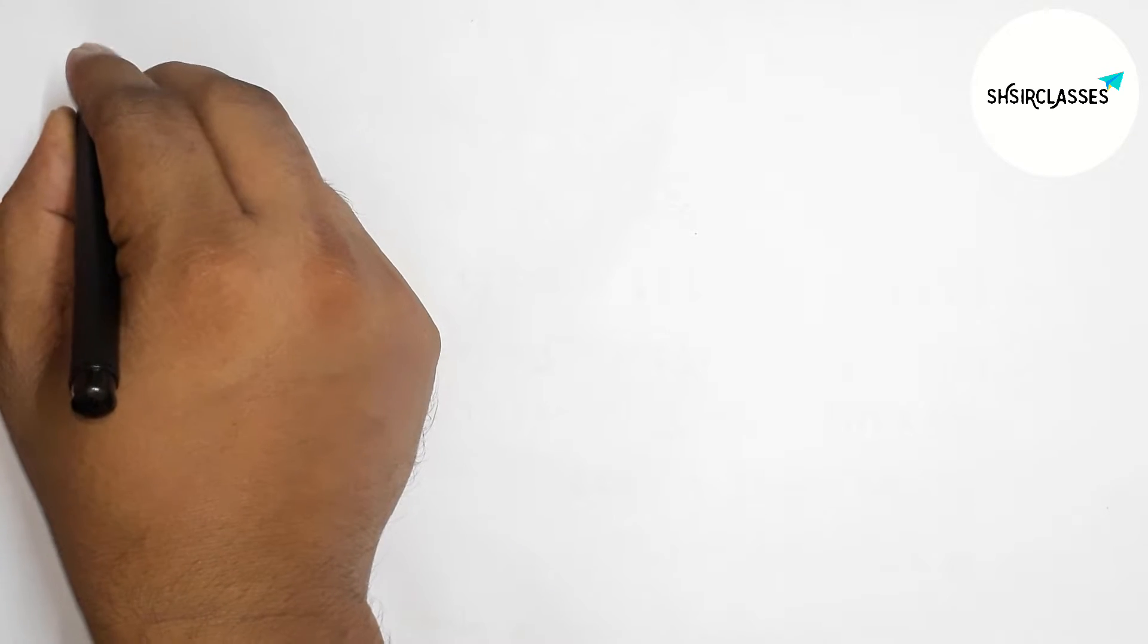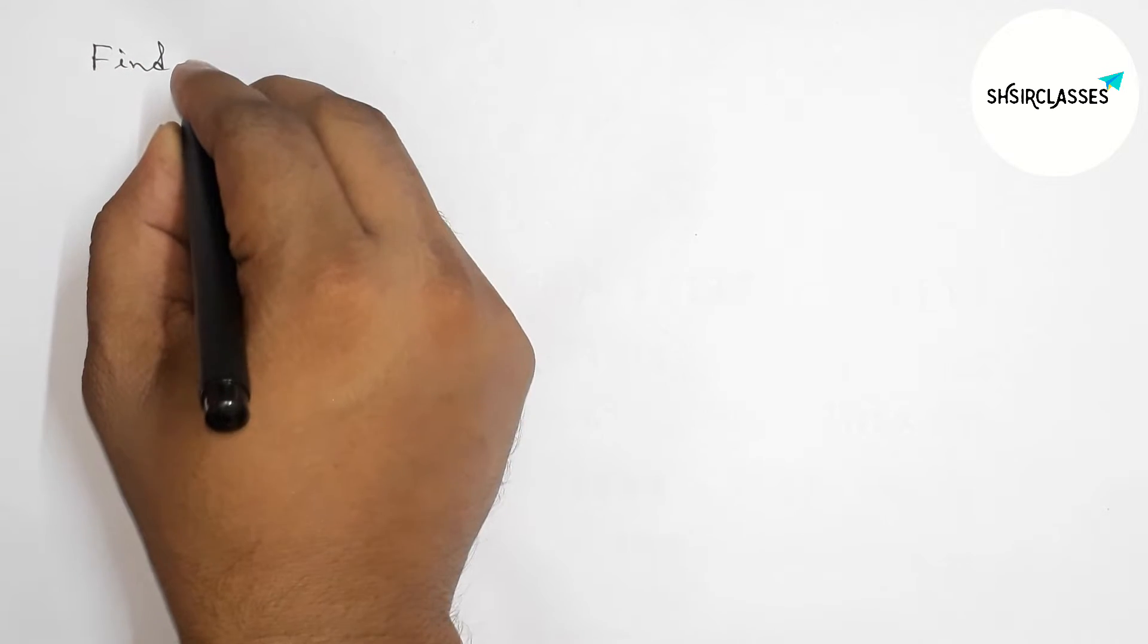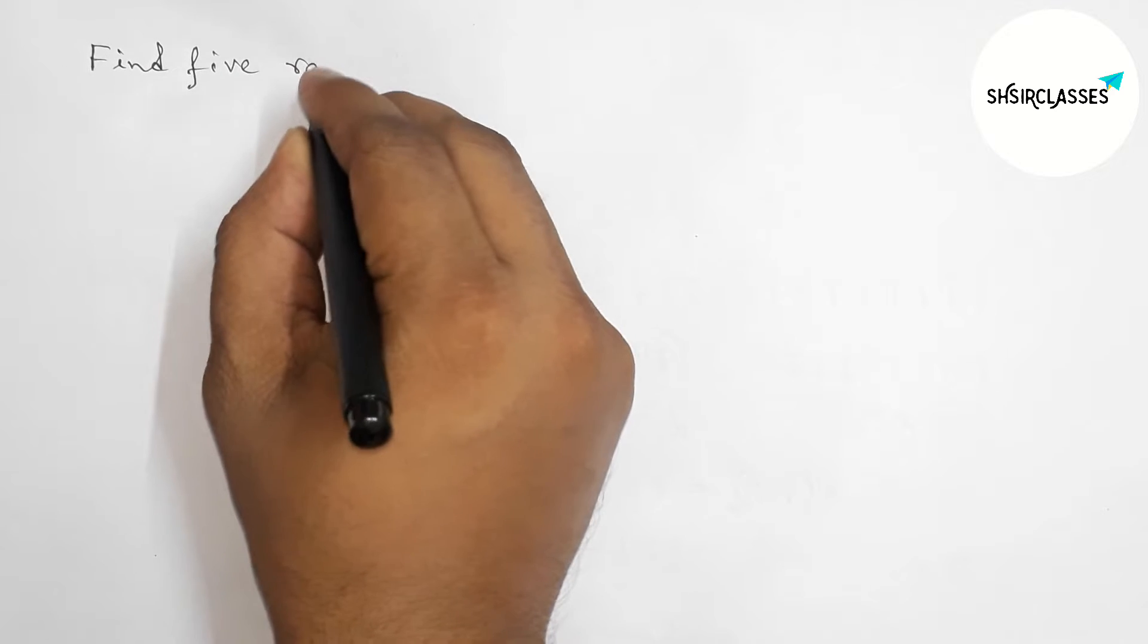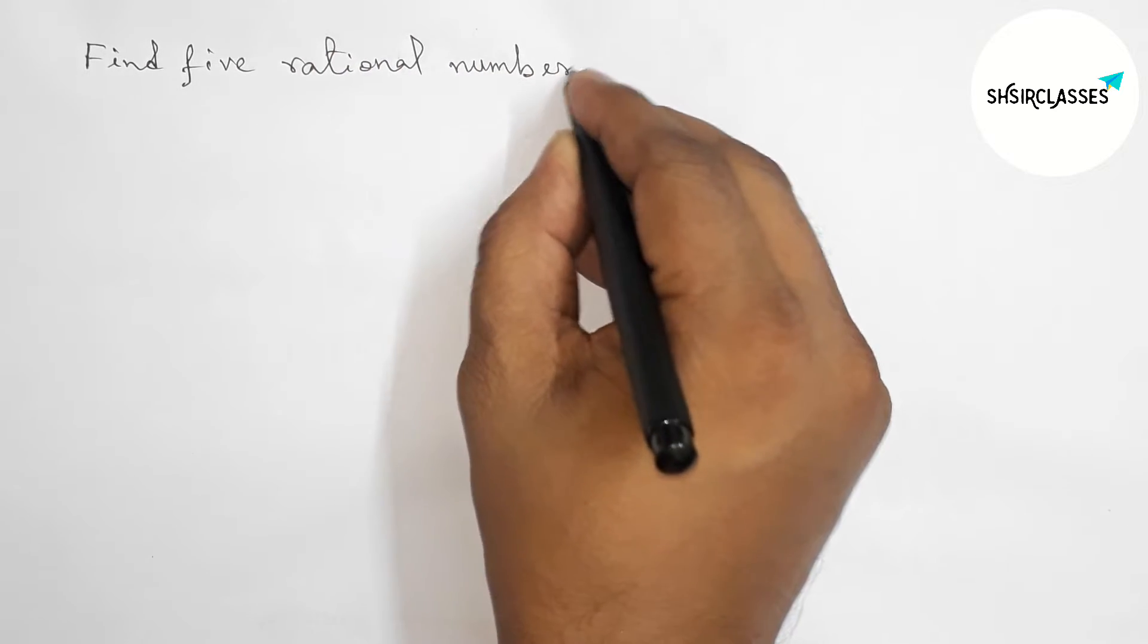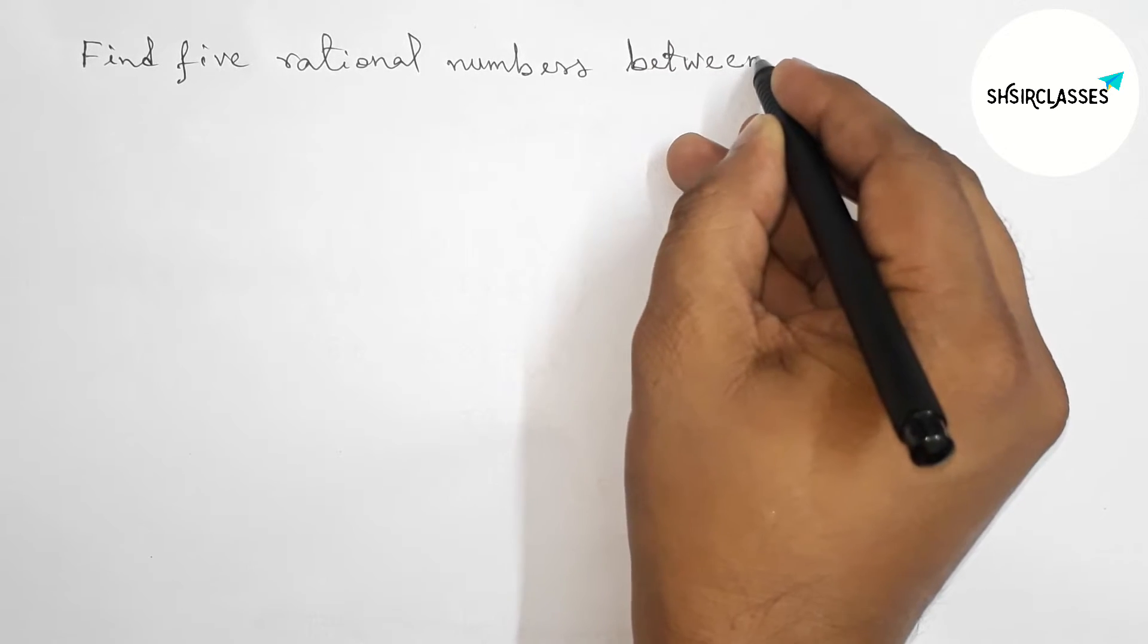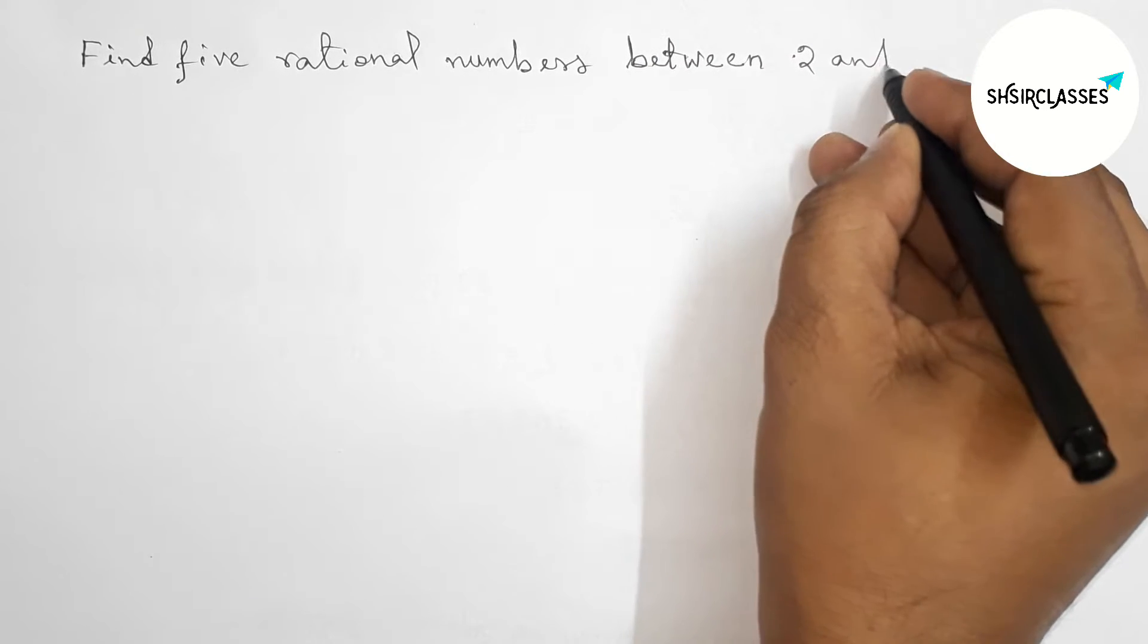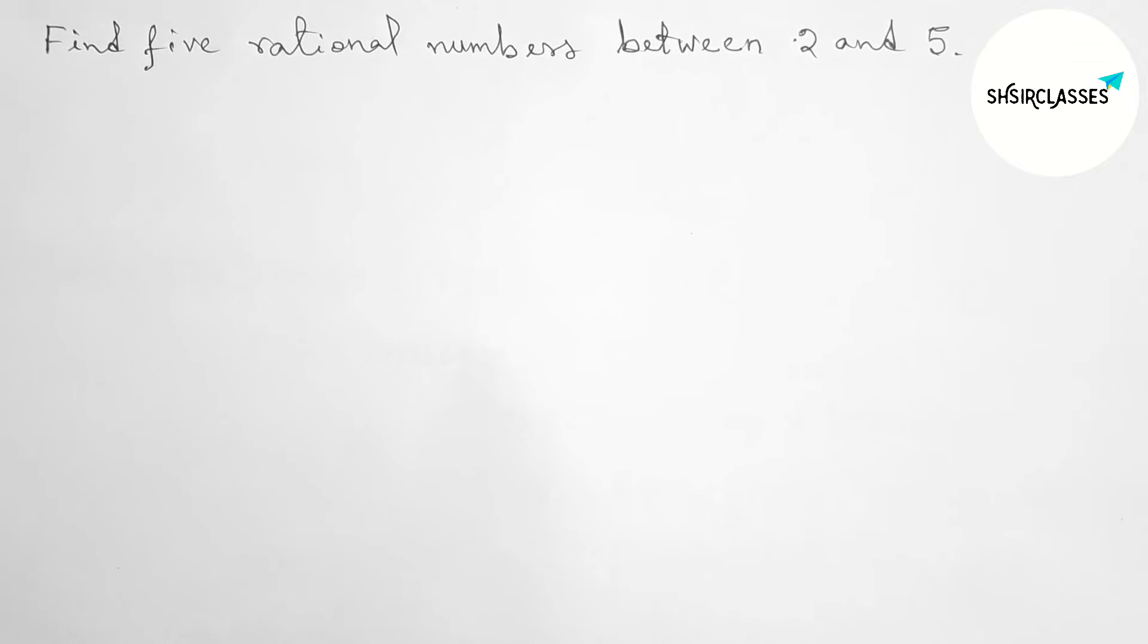Hi everyone, welcome to SI Share Classes. Today in this video we have to find 5 rational numbers between 2 and 5 in an easy way. So please watch the video till the end. Let's start the video.